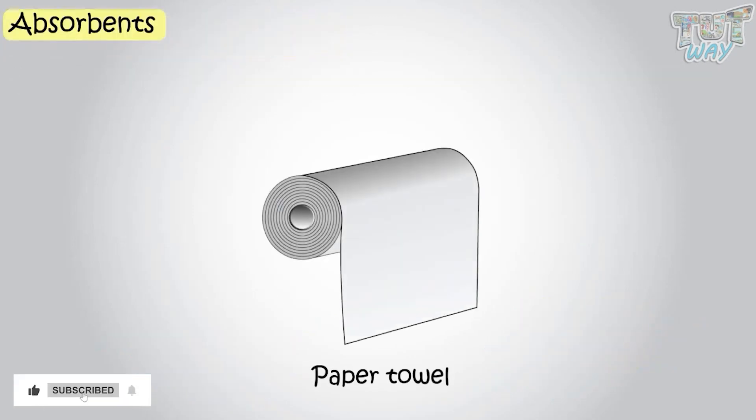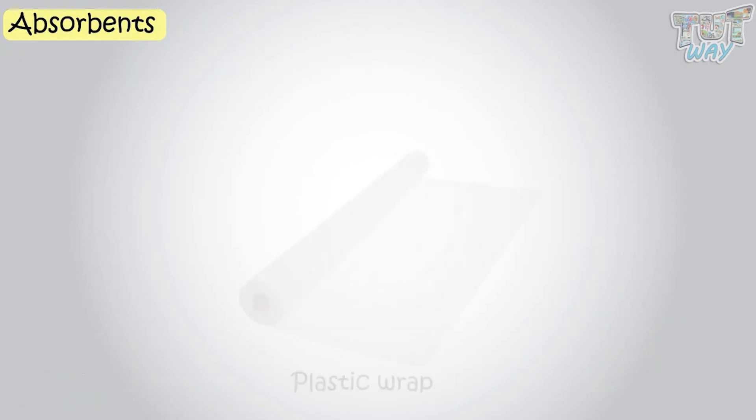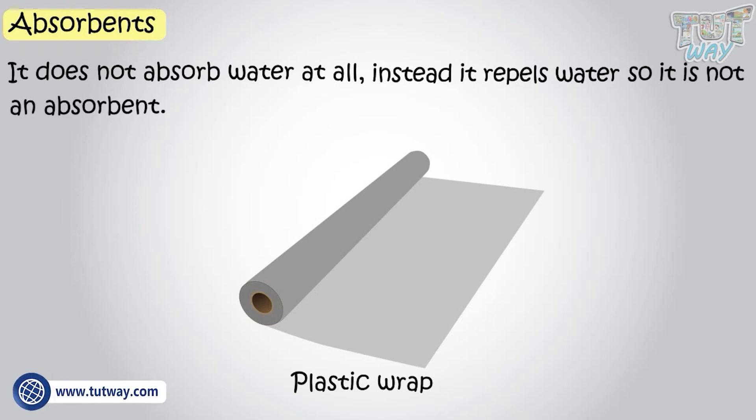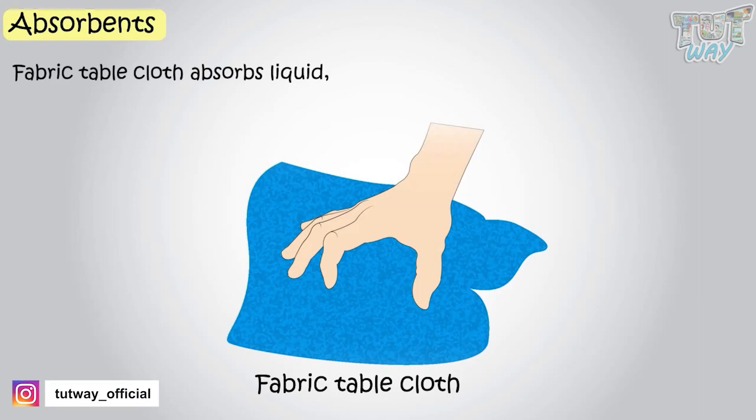This is a paper towel. Yes, it absorbs water. So it is an absorbent. This is a plastic wrap. It repels water. It does not absorb water at all. So it's not an absorbent. This is a fabric tablecloth. Yes, it absorbs liquid. So it's an absorbent.